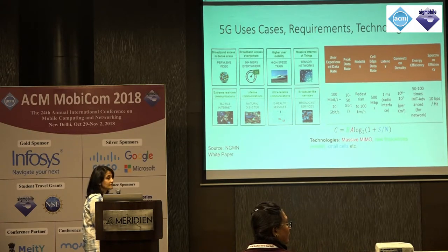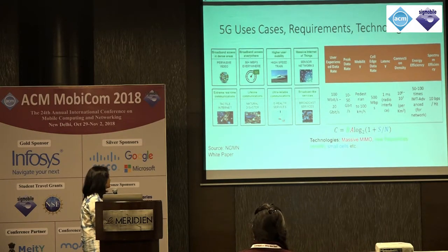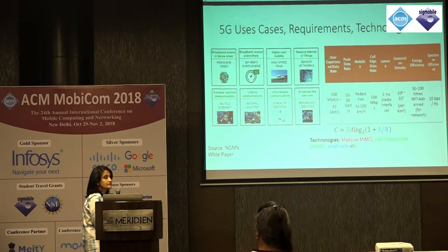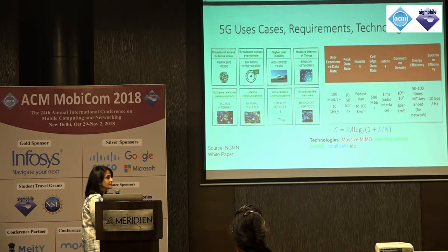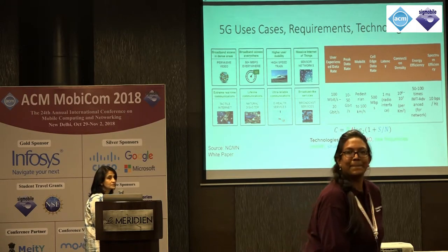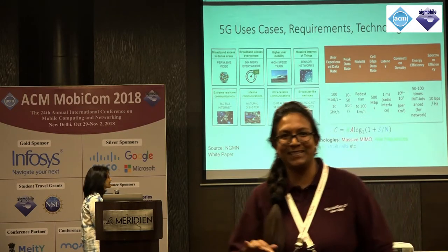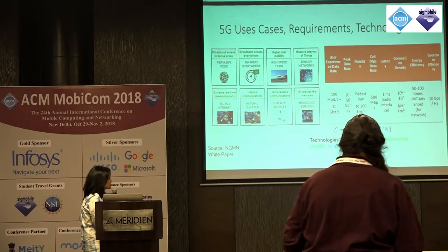Latency requirement is one millisecond — today we are at about 15 milliseconds, so that's a huge reduction. Connection densities are going up, more relevant for smart city and IoT applications. Energy efficiency is also a performance metric for 5G, and spectrum efficiency — the metric communications researchers are most familiar with — is targeted at 10 bits per second per hertz.